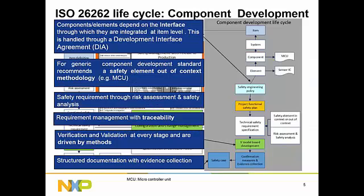From a component point of view, it interacts with the system or rest of the components through an interface — it could be a technical interface or a process-level interface at different levels. For a generic component development, the standard also defines something called a safety element out of context, in which we assume a set of safety contexts in which the component is going to be used. Based on this, we can derive a set of safety requirements through risk assessment or safety analysis. Requirements need a formal process ensuring traceability, and verification needs to be deployed at every phase of the design stage. Everything we do needs to be structurally documented to ensure evidence and repeatability.